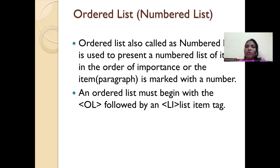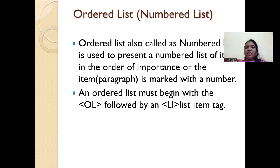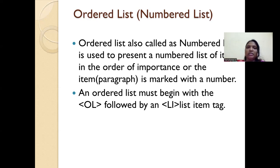When I say ordered list, this is also referred to as a numbered list. When you create the list, it will be using numbers — 1, 2, 3 — like this. It will give a numbered list to the content, marked with a number. For creating a list in HTML, the tag which we use is OL for ordered list. And for defining the list items which you wanted to number, we have to use the tag LI. Let us see the syntax for creating this ordered list.